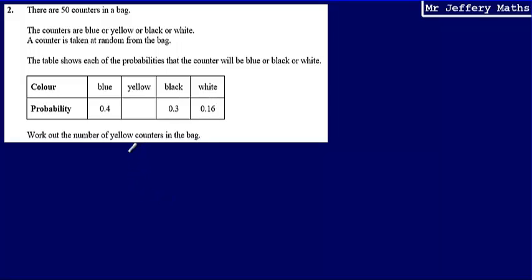So the first thing that we're going to need to do is work out what the probability of selecting a yellow counter is. In order to do this, we need to recognize that probabilities sum to one. At the moment, we've got 0.4, 0.3 and 0.16.